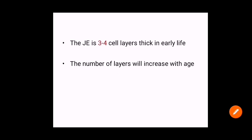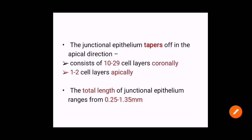Junctional epithelium is three to four cell layers thick in early life, but the number of layers increases with age. It has a tapering shape, tapering in the apical direction: there are more cells coronally — around 10 to 29 cell layers — and only 1 to 2 cell layers apically. The total length of junctional epithelium is around 0.25 to 1.35 mm.